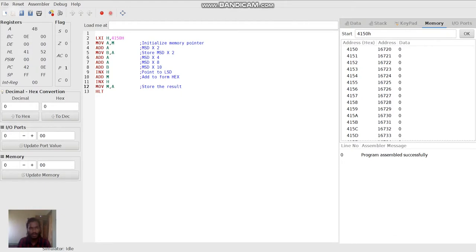Now, the program is assembled successfully and at 4150 hex, let us input 30 30 and I am executing it. The equivalent hexadecimal number is 1E which can be seen here in the register section.